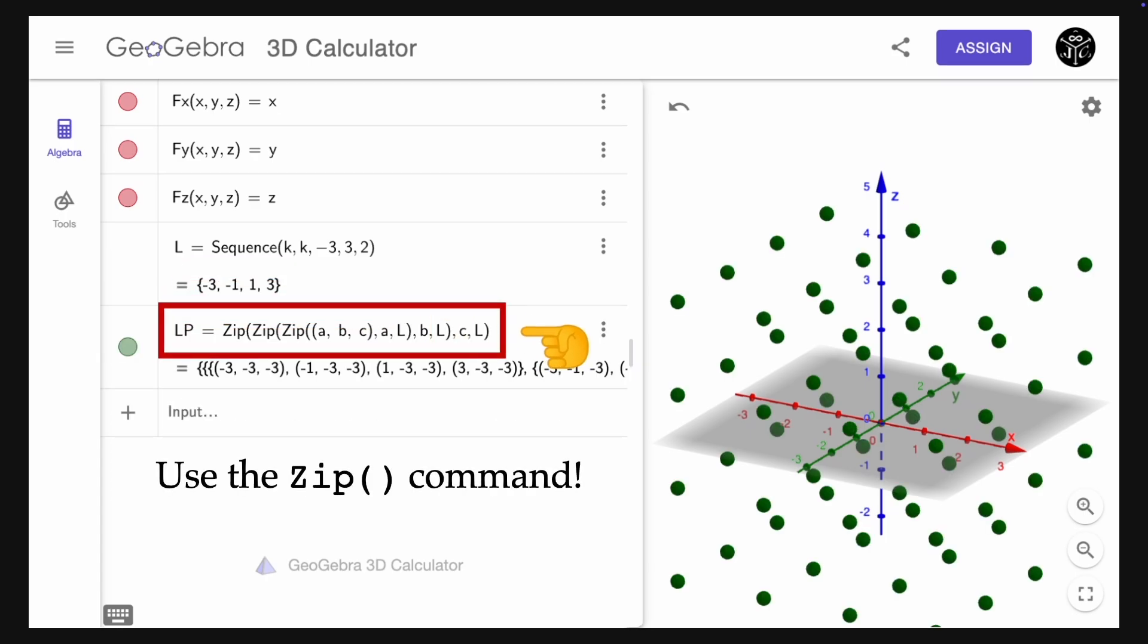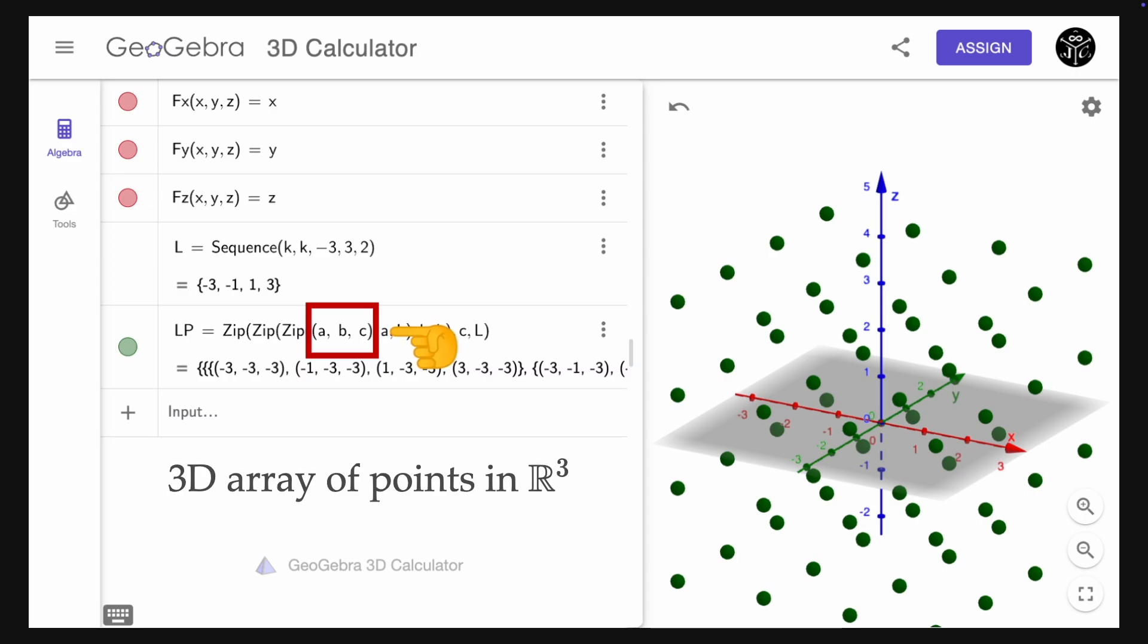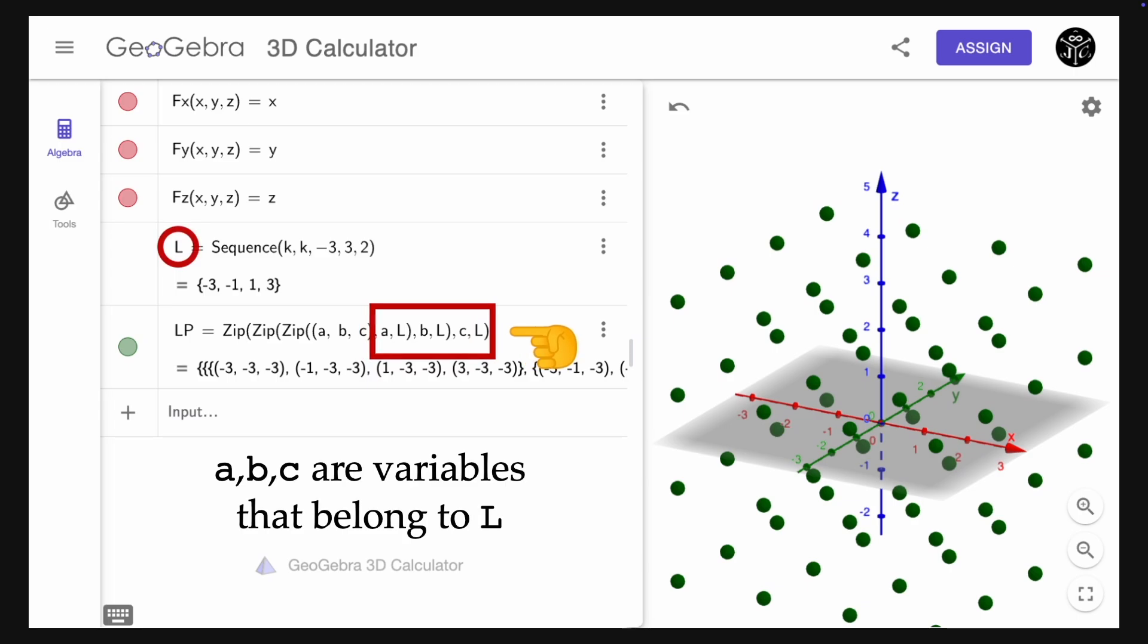Now define the list LP using the command zip three times, with the expression A, B, C within brackets. This expression defines a 3D array of points in R3, where A, B, and C are variables that belong to the list L that we defined previously.